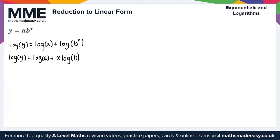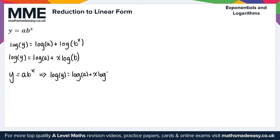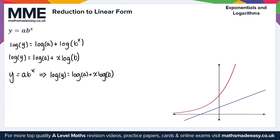Overall, we have y equals ab to the power of x, and this gives us log y which is equal to log a plus x log b. Now if we plot log y against x, we obtain a straight line graph, as we can see from this graphical representation.